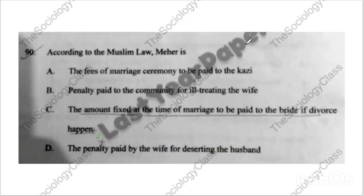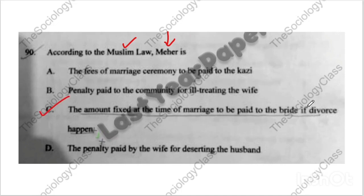Question number ninety is about Muslim law and Muslim marriage — these are topics you need to remember as questions will come from them. Meher — what is it? The correct answer is C — it is the amount fixed at the time of marriage to be paid to the bride. Always remember: it is paid to the bride if divorce happens.